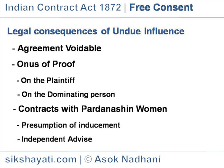On the Dominating Person: When a person is in a position to dominate and the transaction on its face or on evidence produced appears to be unconscionable, the burden of proof that the contract was not induced by undue influence lies upon the dominating person. The other party, in order to save himself, may counter-prove that he had disclosed all material facts, that there is no strong relationship between the parties, and that competent and independent advice was available.